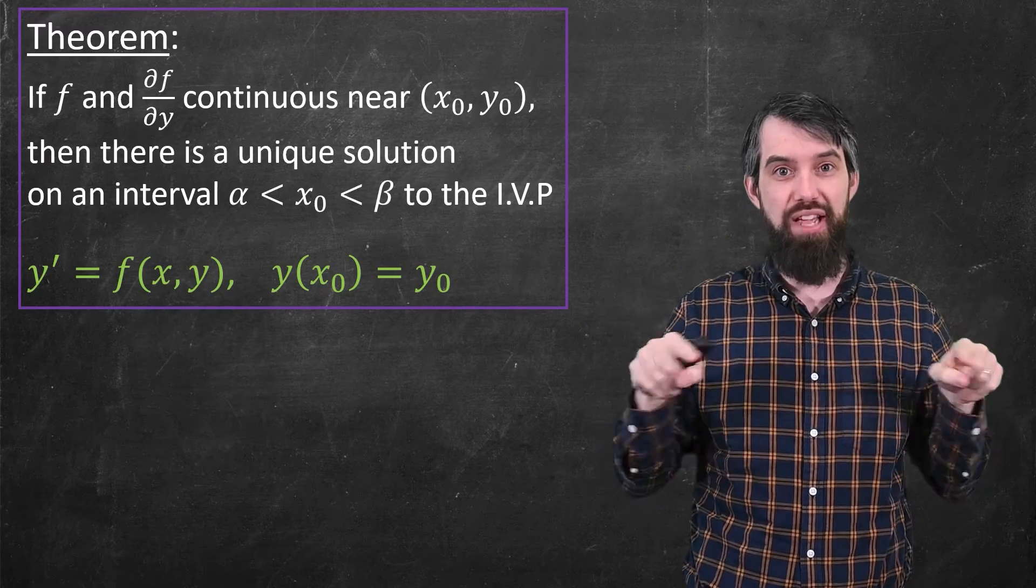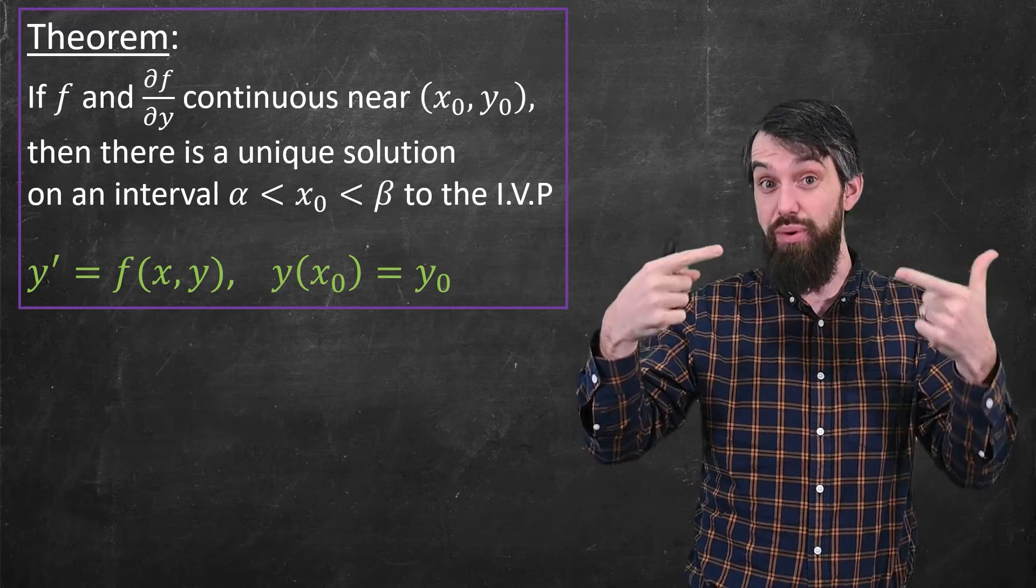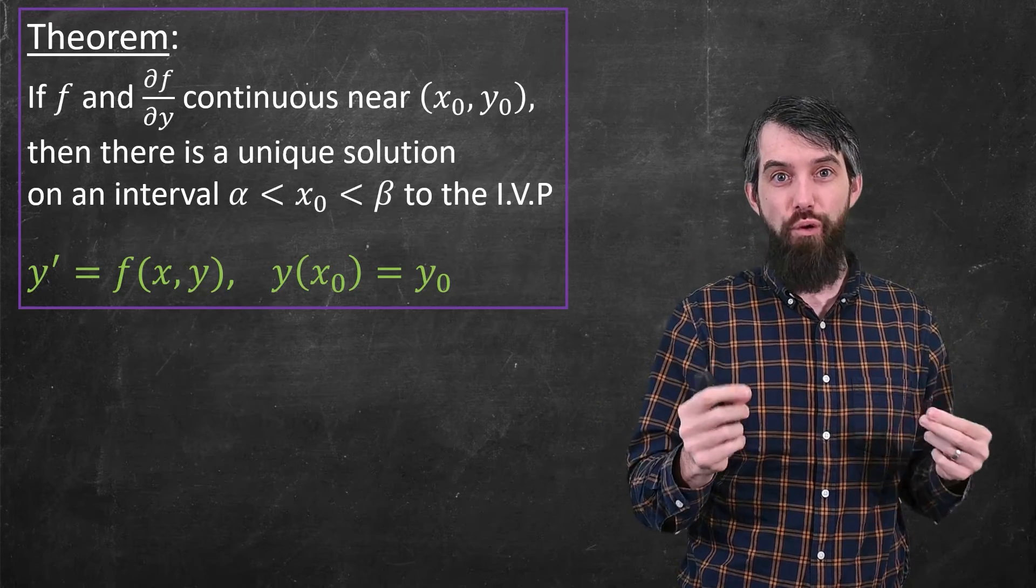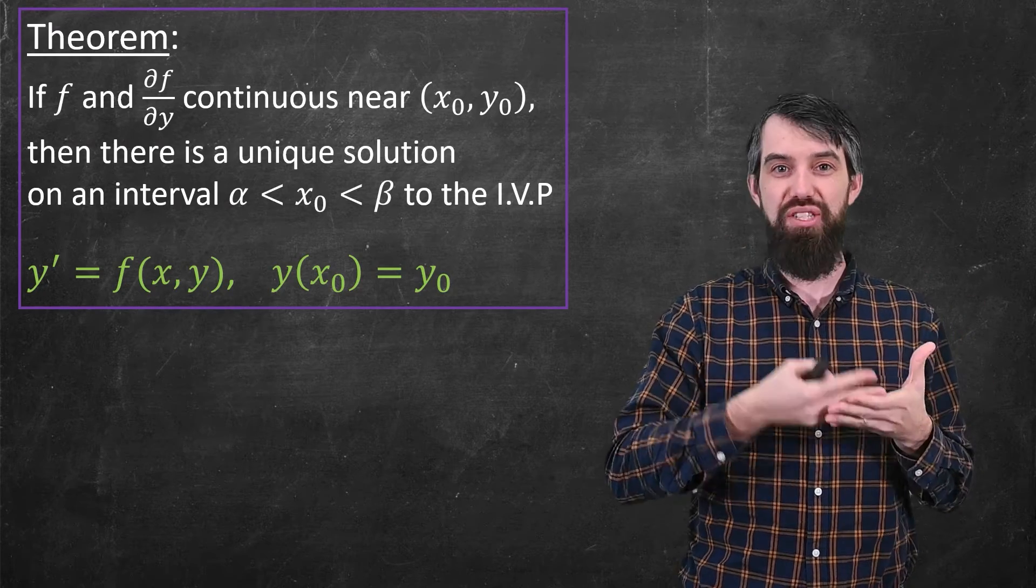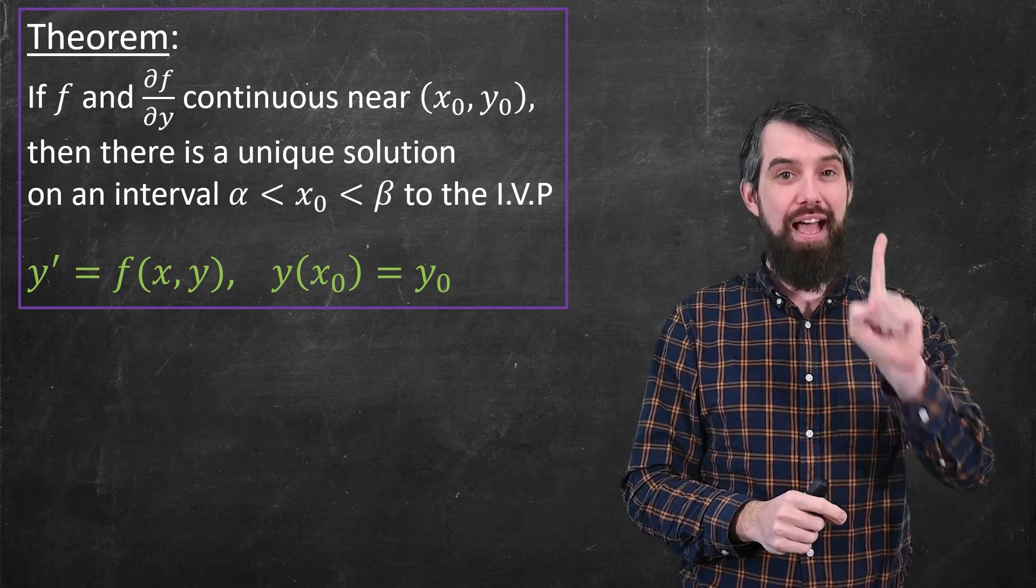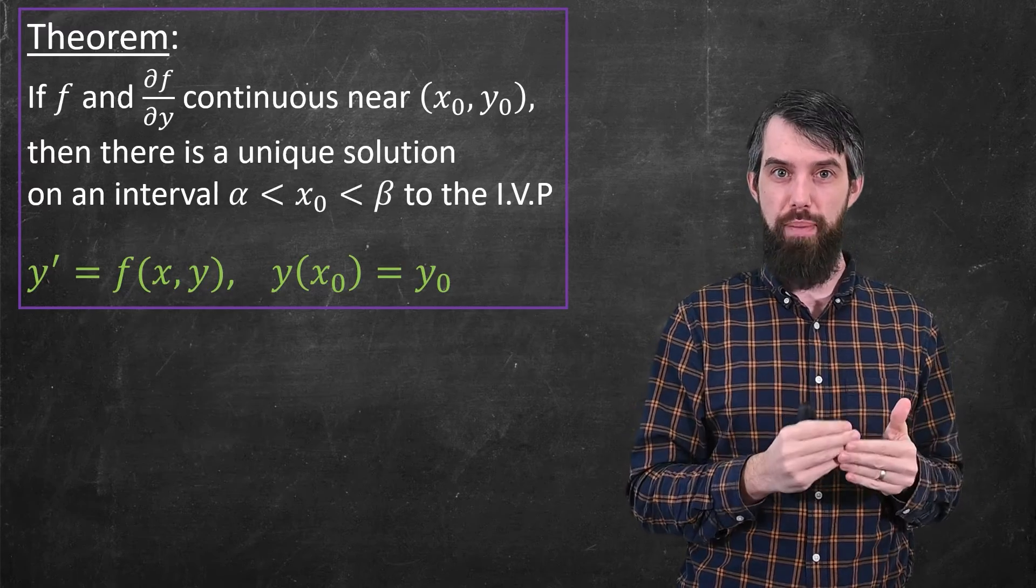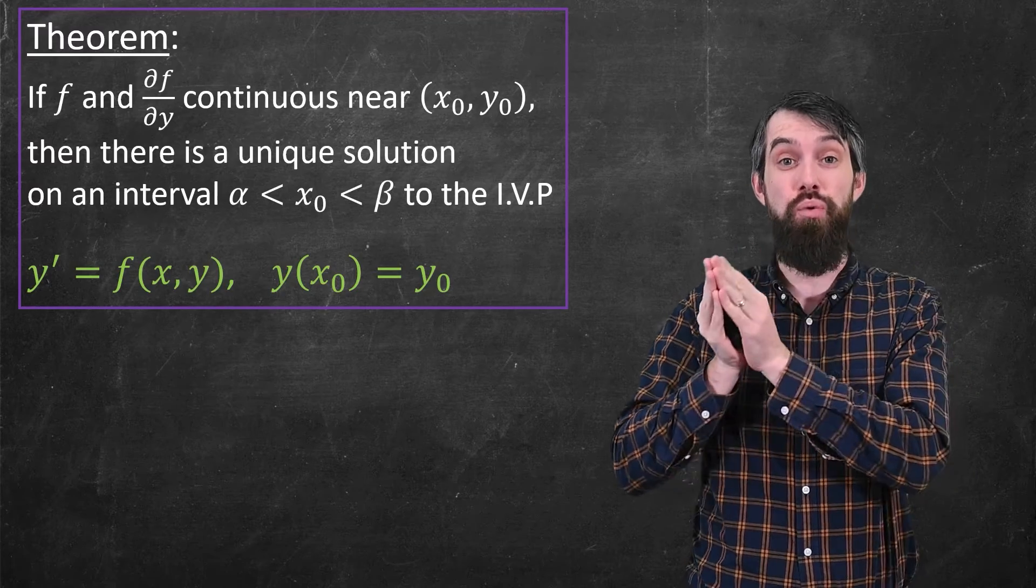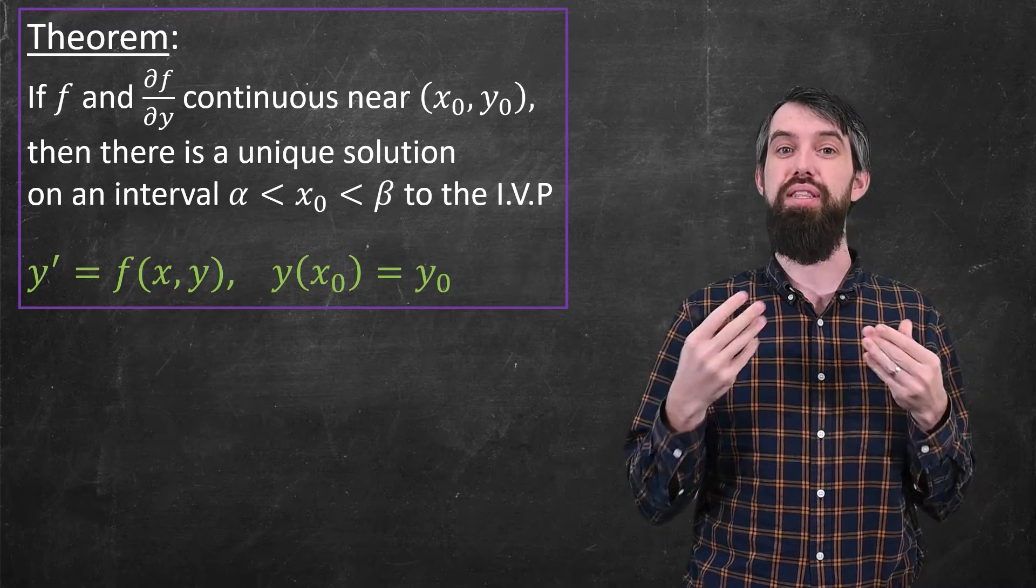And then my conclusion is that for that initial value problem, the y' = f and then the y(x₀) = y₀, for that initial value problem there is a solution and that solution is unique. That is, there exists a unique solution to that initial value problem. This is sometimes called Picard's theorem, but it's an example of an existence and uniqueness theorem. It's giving conditions for when there exists a unique solution to the initial value problem.